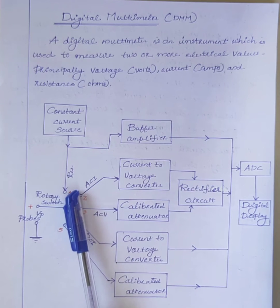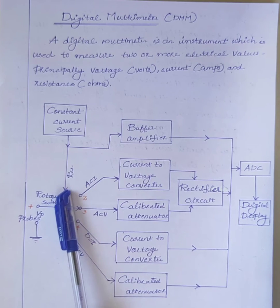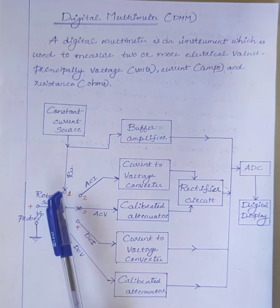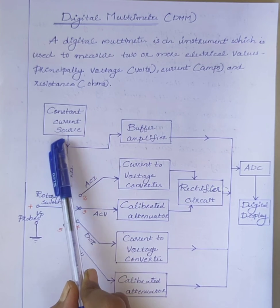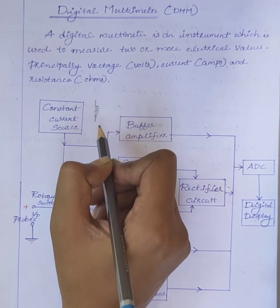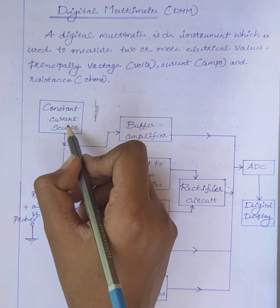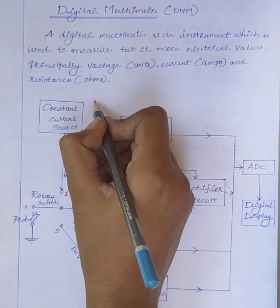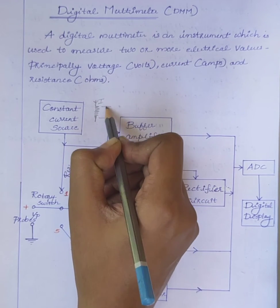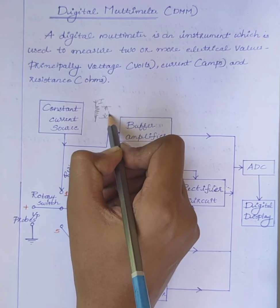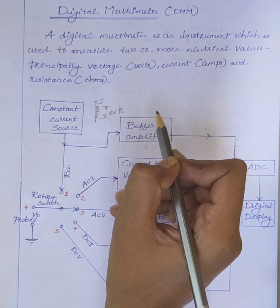The first one is the measurement of resistance. For that, the rotary switch is connected to terminal 1. For the measurement of resistance, the meter includes a constant current source. This one is the unknown resistor whose resistance is to be measured. Using the constant current source, a current is applied through the unknown resistor, and we will get a voltage which is proportional to the value of the unknown resistance.